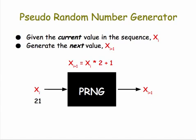If x sub i is 21, x sub i plus 1 is 43. If x sub i is 43, x sub i plus 1 is 87, and so forth. So if we continue in this way, we'll produce a sequence of numbers.